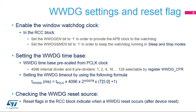The down counter uses the APB clock, P-Clock, divided by 4096, and again divided by a division ratio selected by the application. It can be 1, 2, 4, 8, 16, 32, 64, or 128, as defined in the WWDG_CFR register. The formula shown in this slide lets you determine the watchdog timeout value.